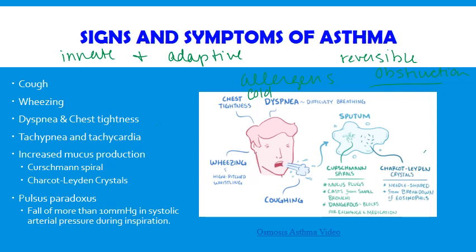When we think about a patient with asthma, they're more likely to have a cough. Wheezing is common. There's difficulty breathing and sometimes chest tightness — when having a really difficult time breathing, it can feel like the chest doesn't want to expand as well as it should. You can also have changes in heart rate, tachypnea, and tachycardia.